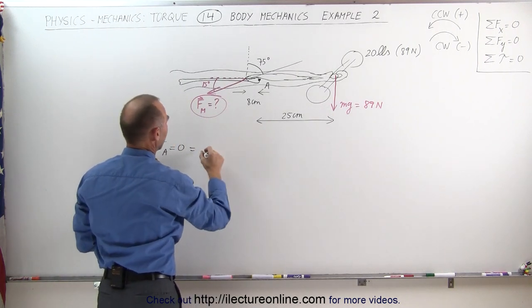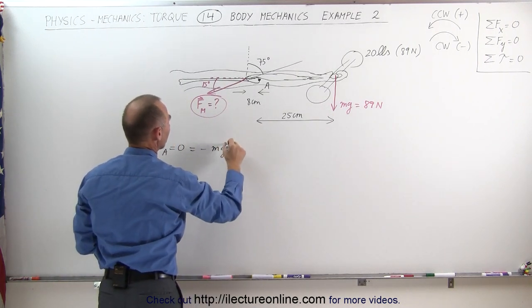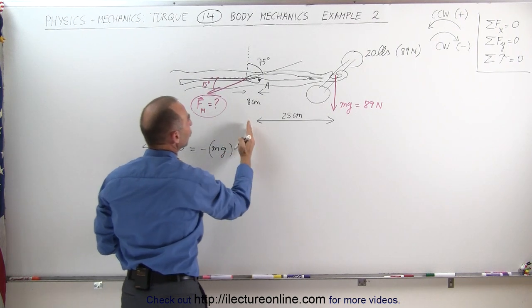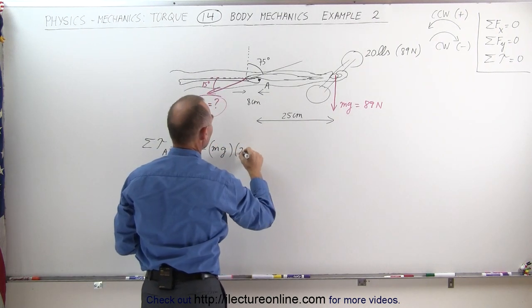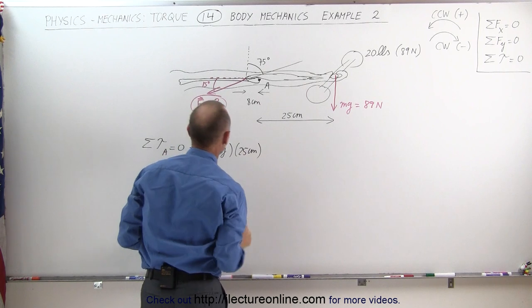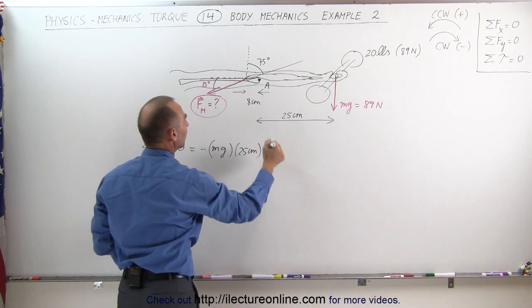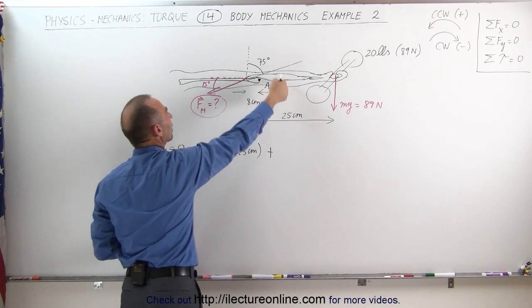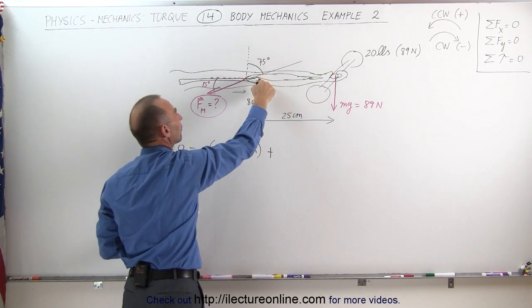That equals minus Mg times 25 centimeters - we can leave it in centimeters because those will cancel out - plus the force caused by the muscle times the perpendicular distance. Let's call it D - the perpendicular distance from the line of action of the force to the pivot point. This causes a counterclockwise torque about pivot point A.